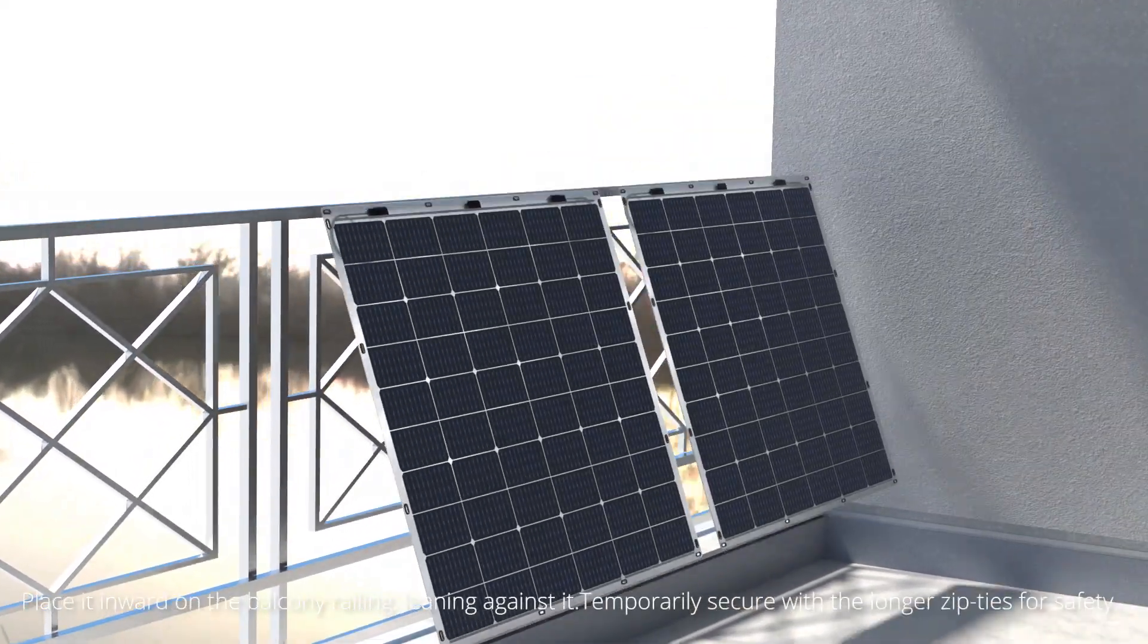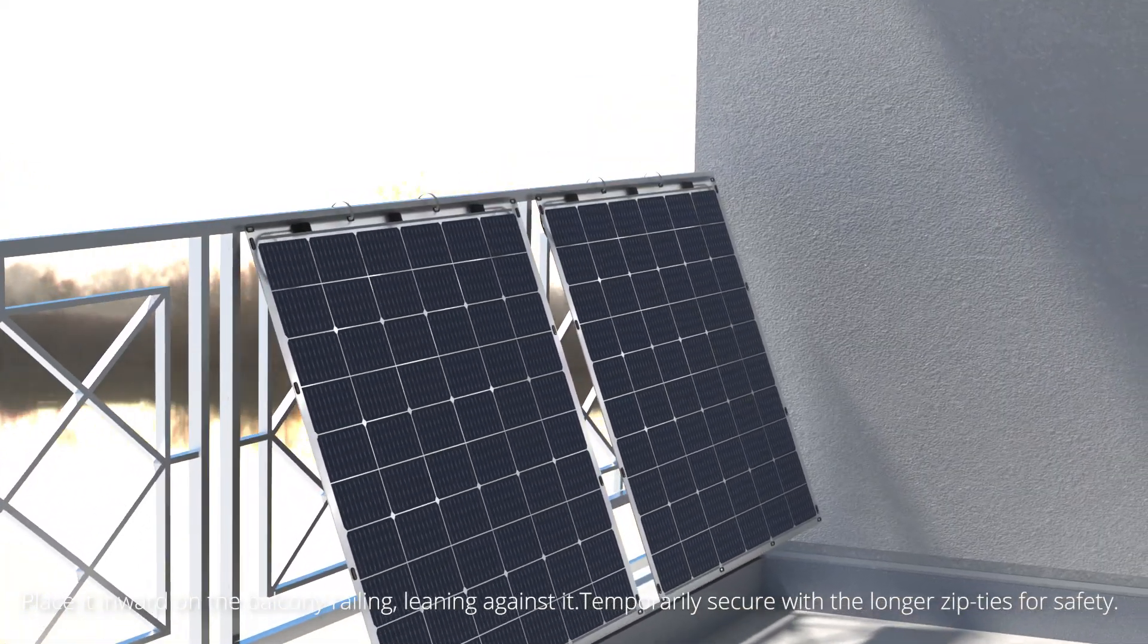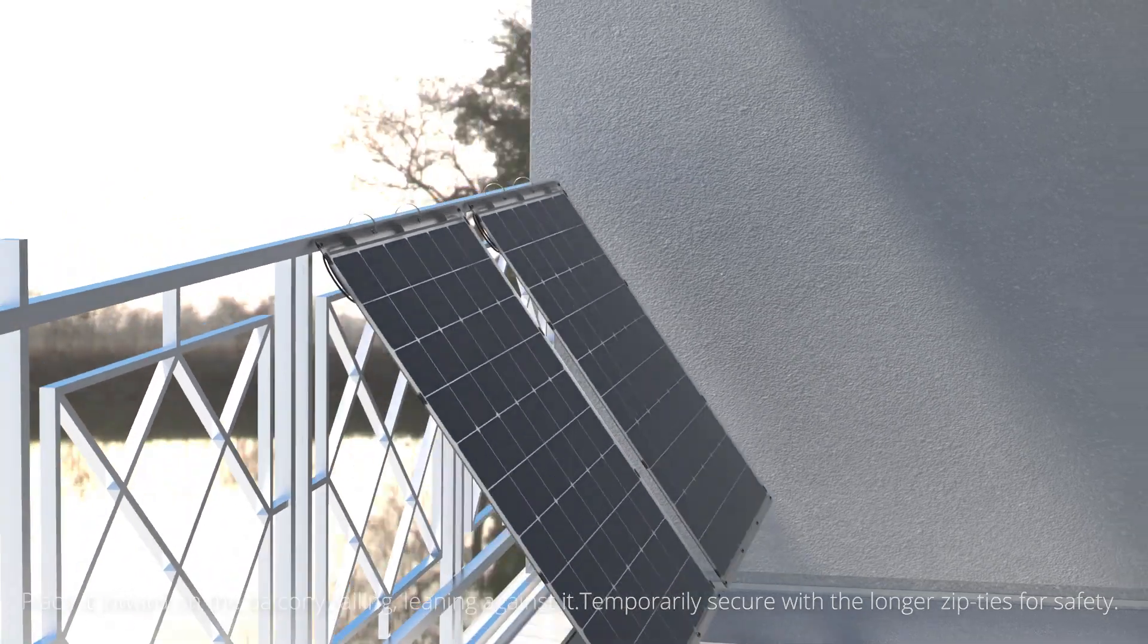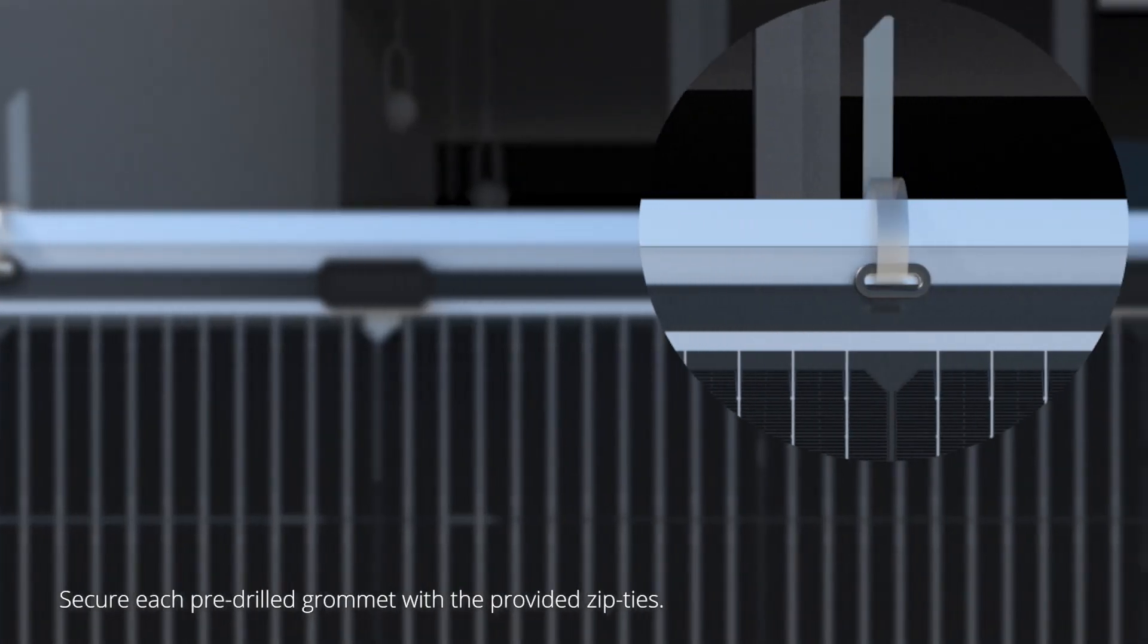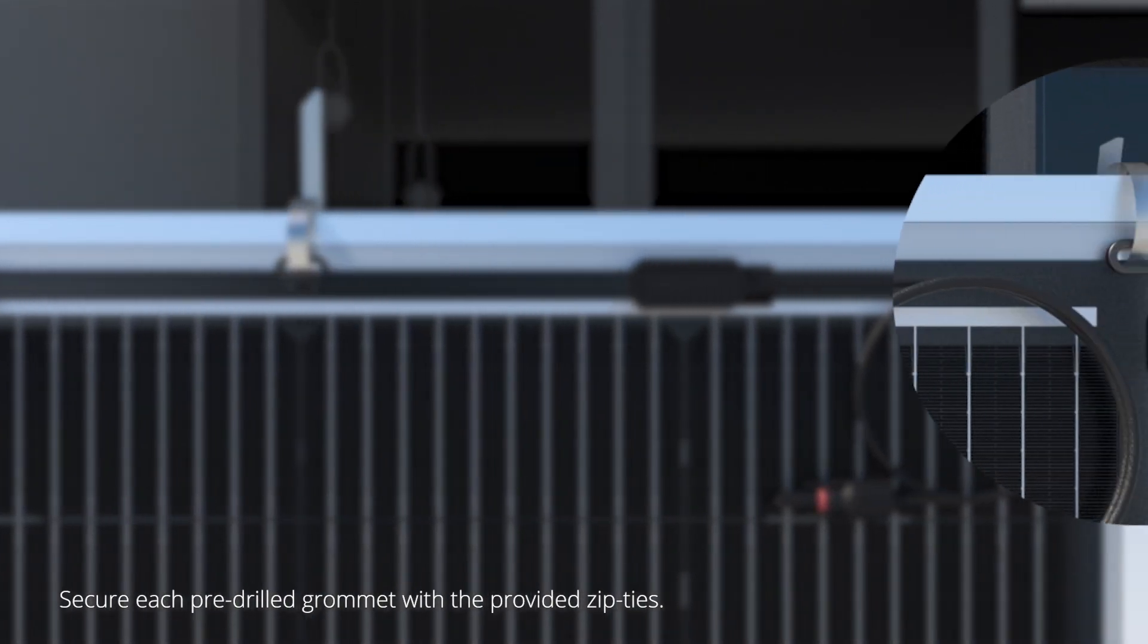Place it inward on the balcony railing, leaning against it. Temporarily secure with the longer zip ties for safety. Flip it over the balcony railing facing outward. Secure each pre-drilled grommet with the provided zip ties.